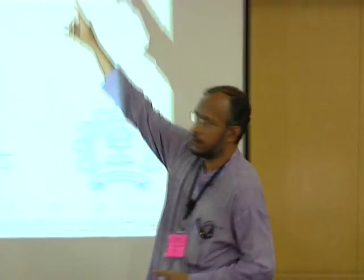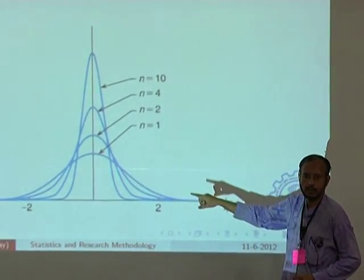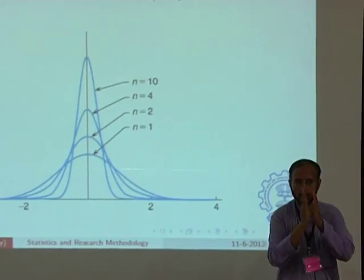As n goes to infinity, this actually becomes one delta function — it becomes a peak, absolutely confident. This is one of the key theorems in statistics which tells you that with more and more samples, as I increase the number of measurements and replicates, I start learning more.